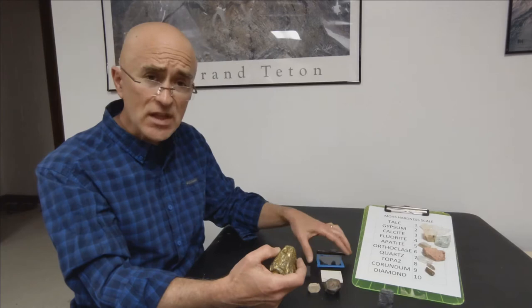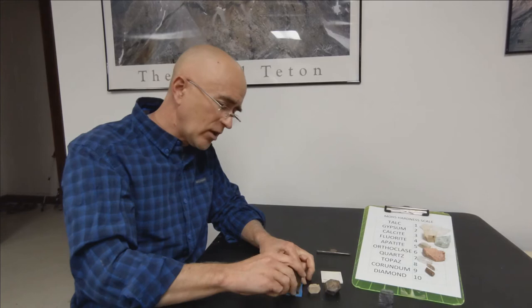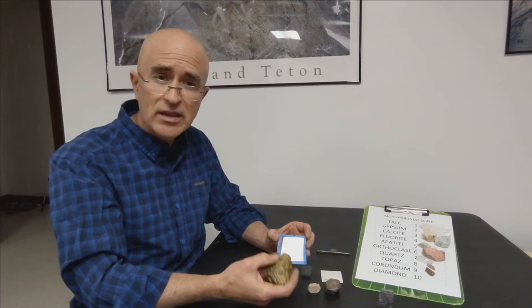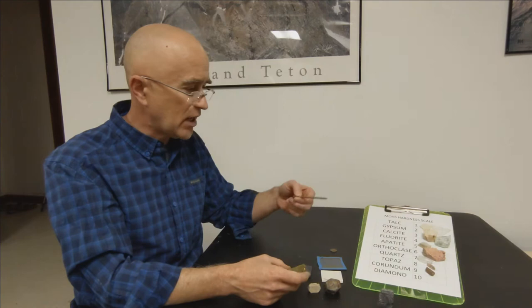The next thing I'll do is I'll take the glass. Putting the glass down on a hard surface I'll rub the mineral against the glass. Nothing happens. It doesn't scratch at all. That tells me that the mineral is softer than the glass.